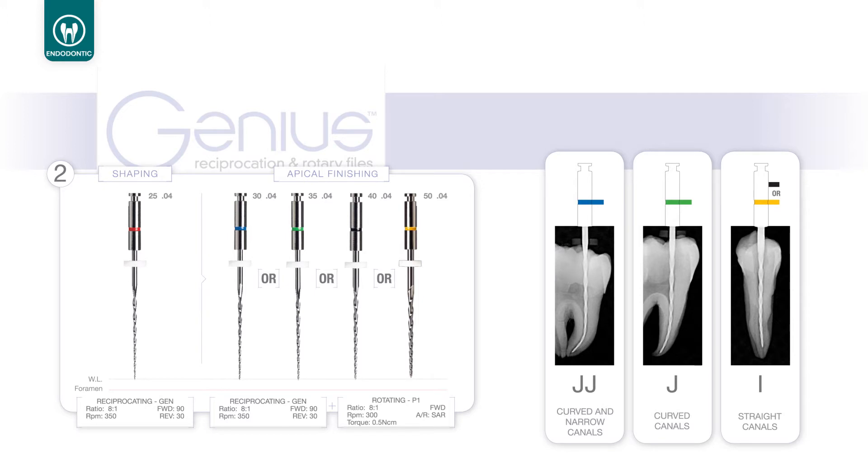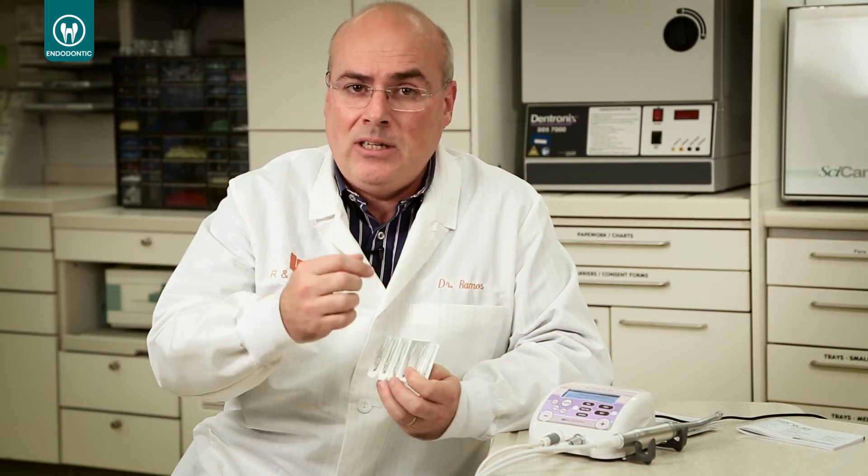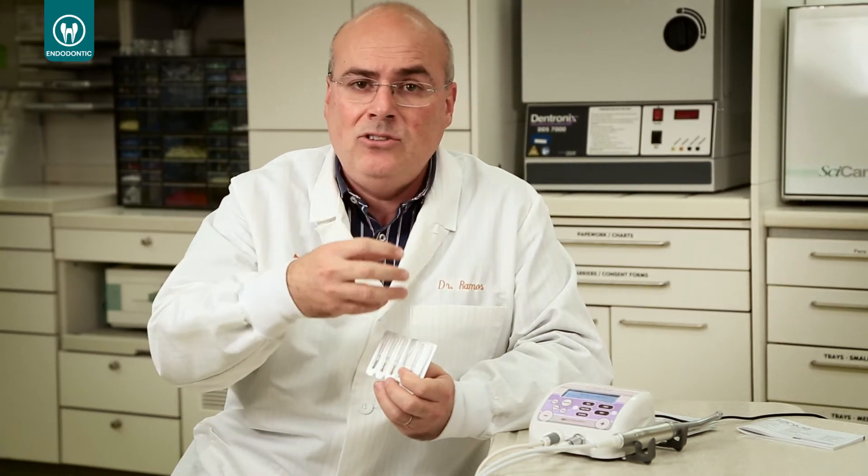After that, you choose one of the final files based on the diameter of the file and the anatomy of the canal. Let's say that you are doing a mesial root of a lower molar, a mesial buccal canal, for example. Then we can choose the 3504. Let's say that you are doing a premolar, then you can use a 40. Or even larger canals, you can use a 50. So the last file will depend on the anatomy that you have on the morphology and the directions of the canal. Plus, you are going to use in reciprocation again until the working length. And then you press the mode button on the Genius motor, and in rotation, just to remove debris, you can finish your instrumentation.